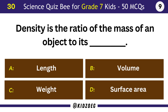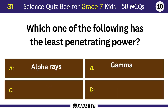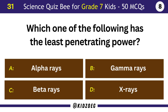Density is the ratio of the mass of an object to its volume. Which one of the following has the least penetrating power? Alpha rays.